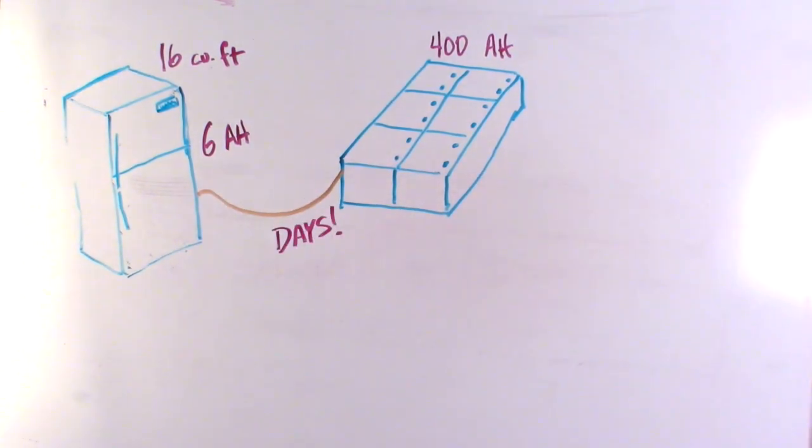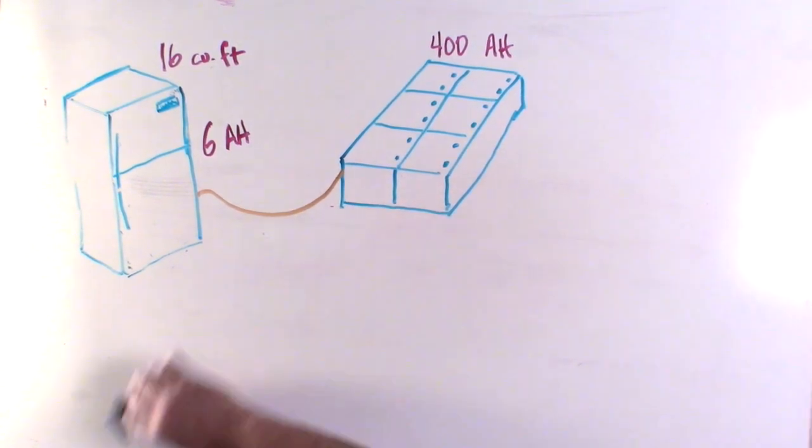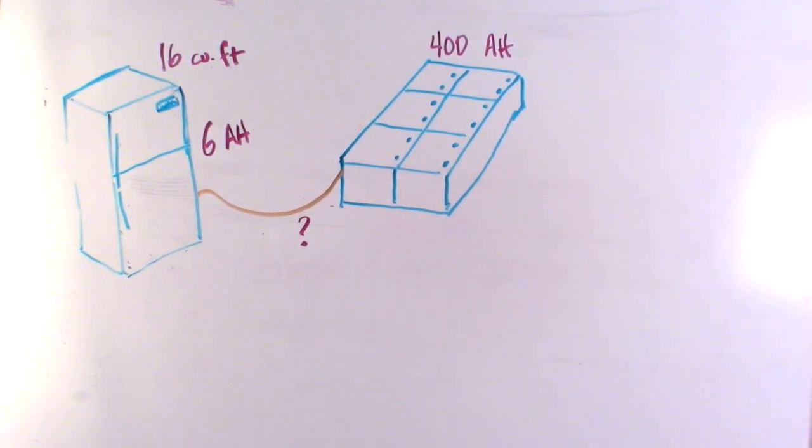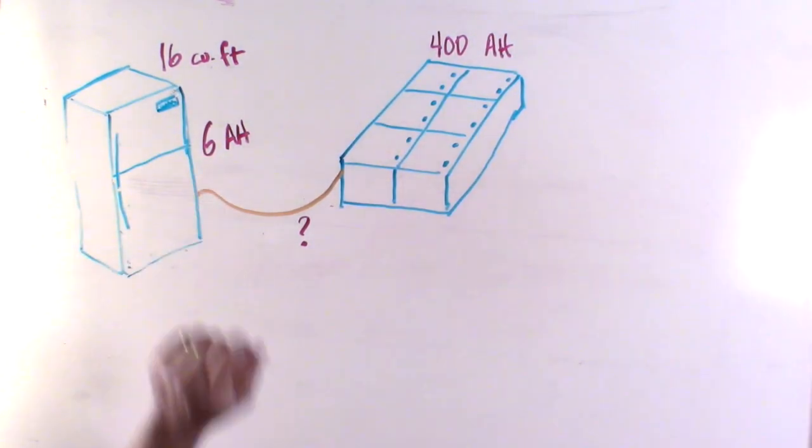I've heard this response from at least a dozen people within the industry from sales reps to owners of dealerships to the manufacturers themselves. People who have been in the industry for decades, and it's absolutely false and I'll prove it. First, they're right about a couple things. The typical 16 cubic foot refrigerator does draw about six amps per hour and many coaches do come with 400 amp hours of capacity or more in their battery banks, but you cannot run that fridge for days.